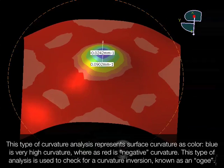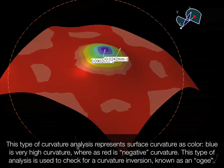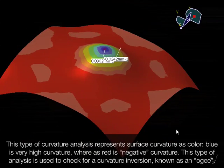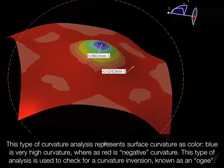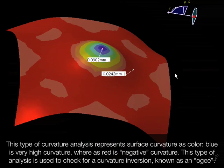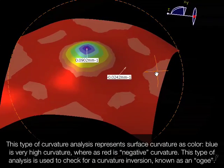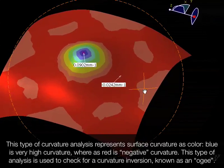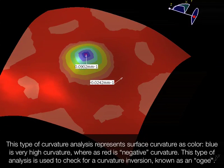One other means of analyzing curvature across a surface is to map colors across it according to different levels of positive and negative curvature. In this example, a tight curvature, or a small radius, is called out with blue color. Any surfaces that have zero curvature or less — i.e., inverted curvature — appear in red. And you can see wherever OGs happen by looking at where the light red areas meet the dark red areas — that's where the inflection point is.